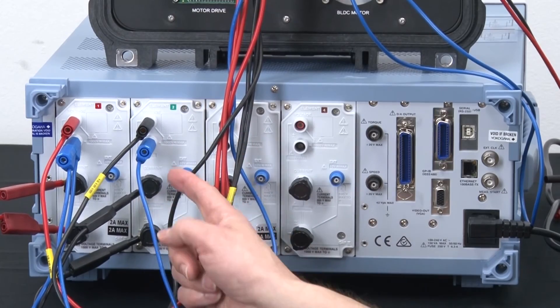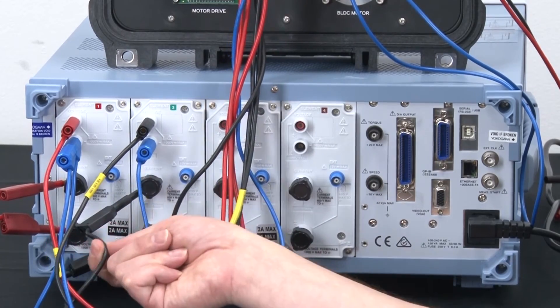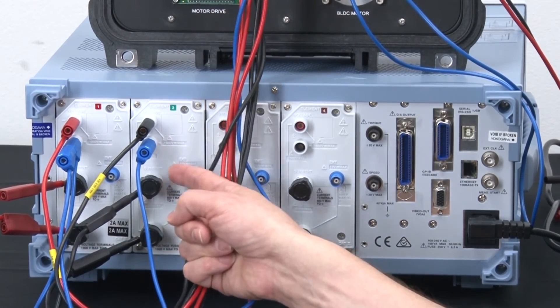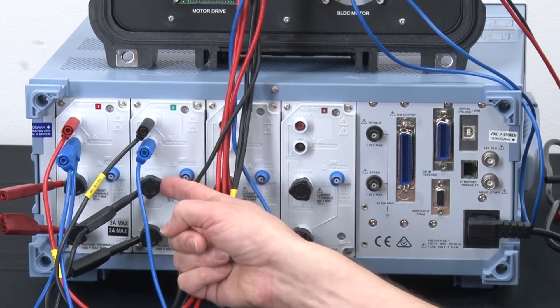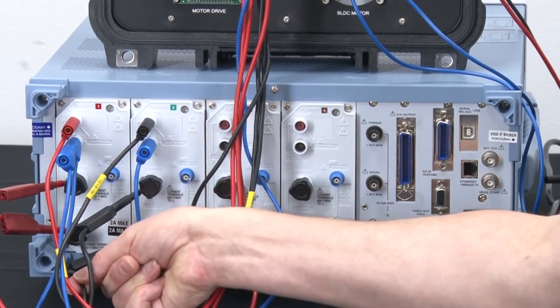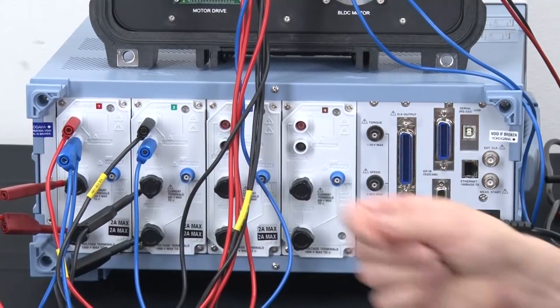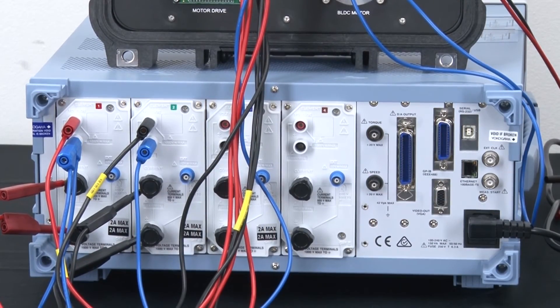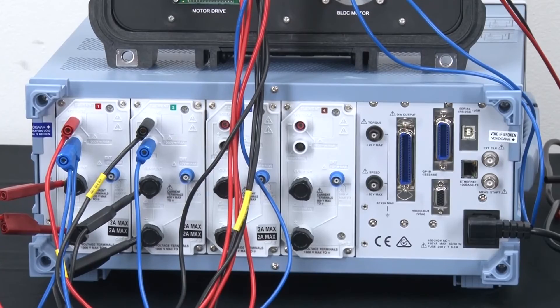Similarly, on wattmeter two, phase S comes from the drive. It's black. It passes through the top of the internal shunt or the current input on wattmeter two, passes out the bottom back to the motor. It's that simple. So let's do an easy or quick power measurement using the setup.